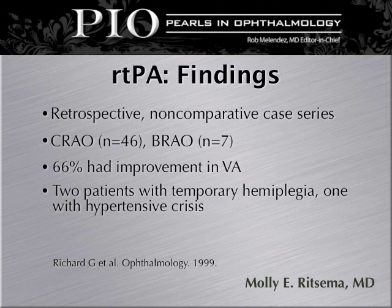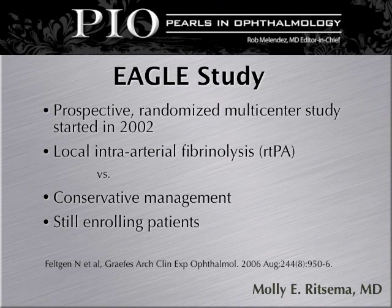The rTPA findings showed, in a retrospective non-comparative case series, that 46% of the patients had a CRAO and seven had a BRAO. 66% had improvement in vision, but two patients experienced temporary hemiplegia and one had a hypertensive crisis. There is also the EAGLE study, a prospective randomized multi-center study started in 2002, comparing local intra-arterial fibrinolysis versus conservative management. This is an ongoing study in which they are still enrolling patients.